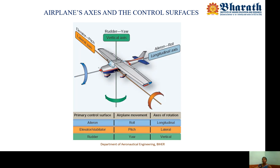Rolling happens about the longitudinal axis. Let the thumb and little finger represent the wings and the arm as the fuselage — this demonstrates rolling. When the right wing goes down, it is right roll; when the left wing goes down, it is left roll. Pitching happens about the lateral axis. Yawing happens about the vertical axis — imagine an axis running vertically through the aircraft.